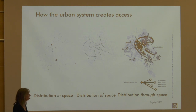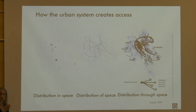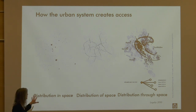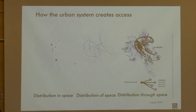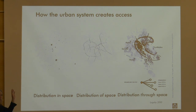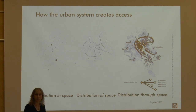To highlight the difference — this is after Donald Koch — the narrative is that it is a distribution in space, of space, and through space. In space is what we normally look at: for example, where do we have workplaces? This is the location in space. But it doesn't really say so much about how accessible we are and what affordances we could get from that.